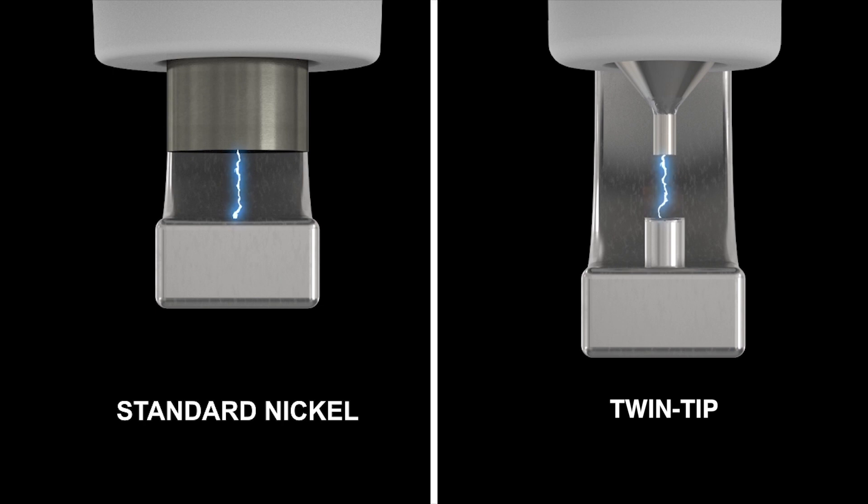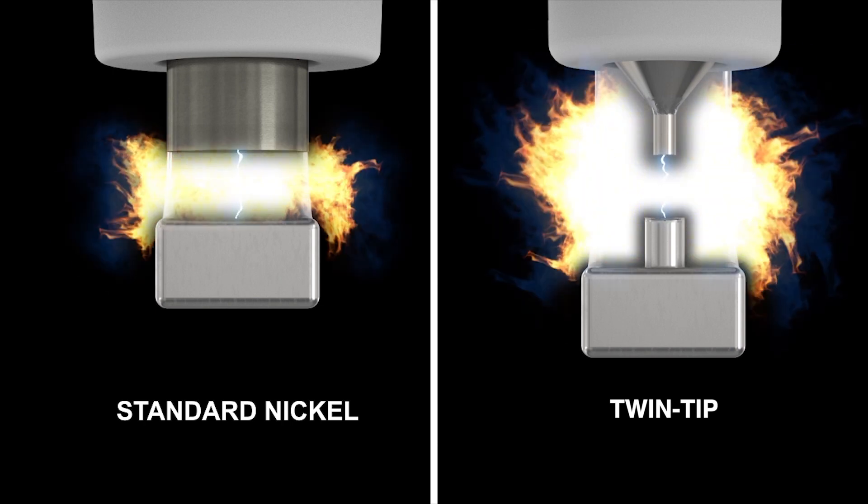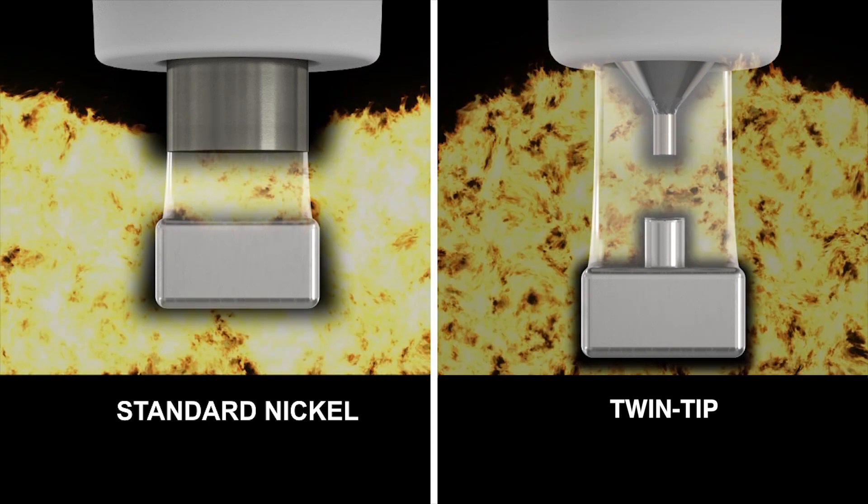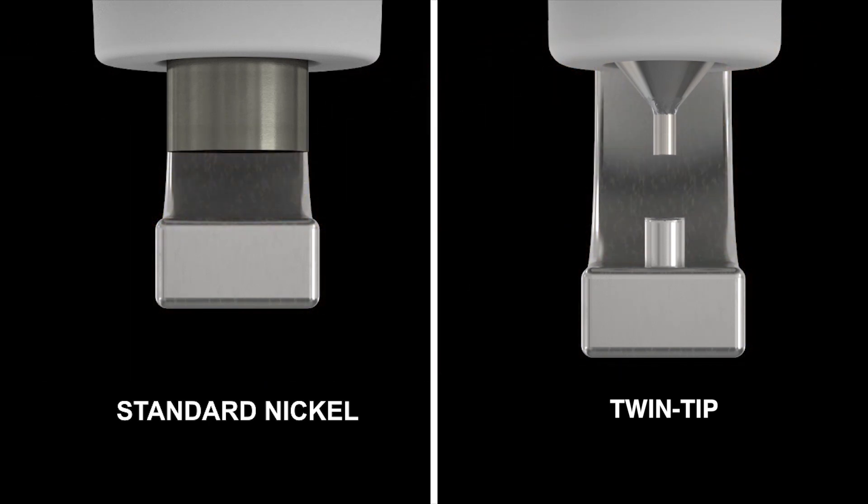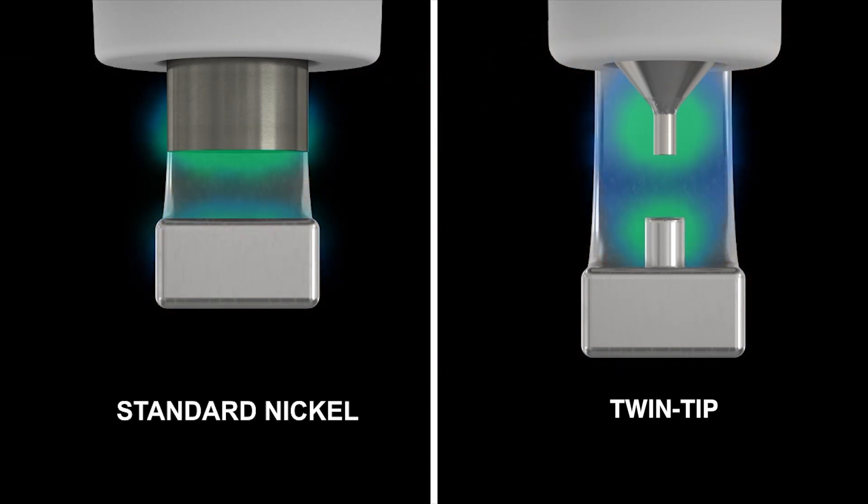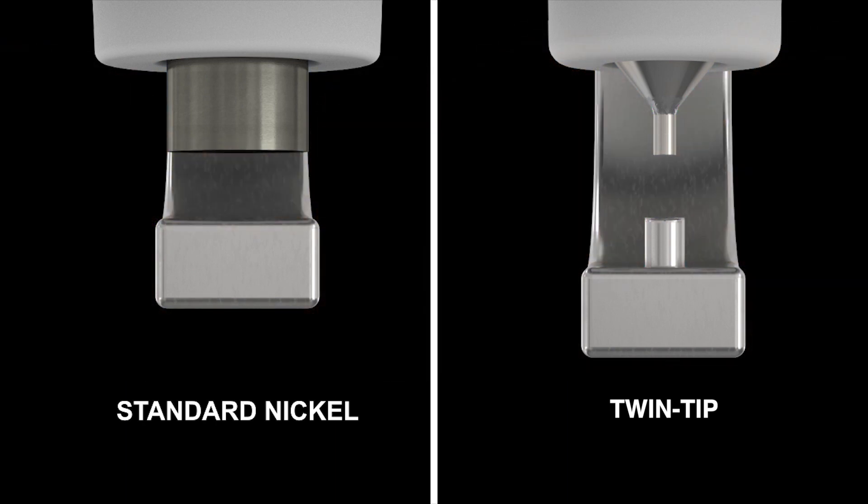These smaller electrodes then have a secondary benefit, because their reduced size does not block or mask the flame growth in the same way as larger nickel electrodes. The result is that the flame grows quicker, producing a more powerful combustion.